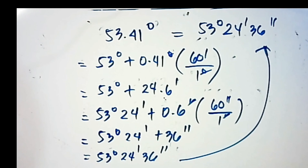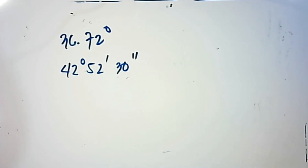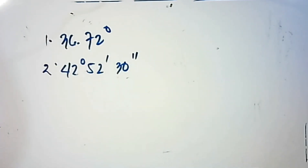That's it. Now it's your turn. Try to solve these examples: number one, convert 36.72 degrees into degrees, minutes, and seconds; and number two, convert 42 degrees, 52 minutes, and 30 seconds into decimal degrees.